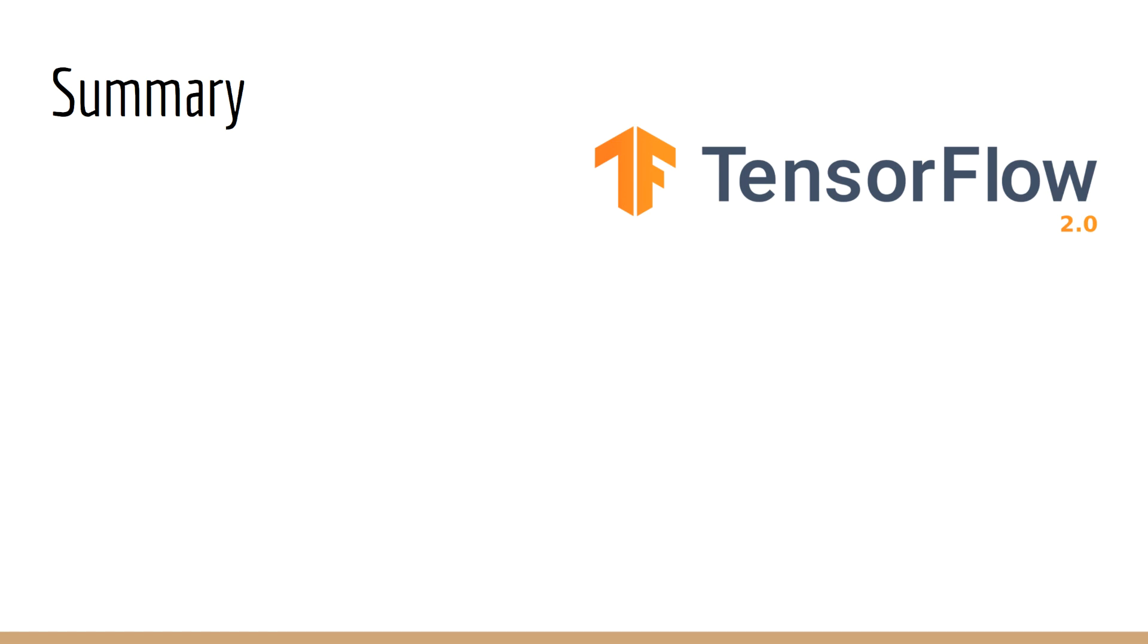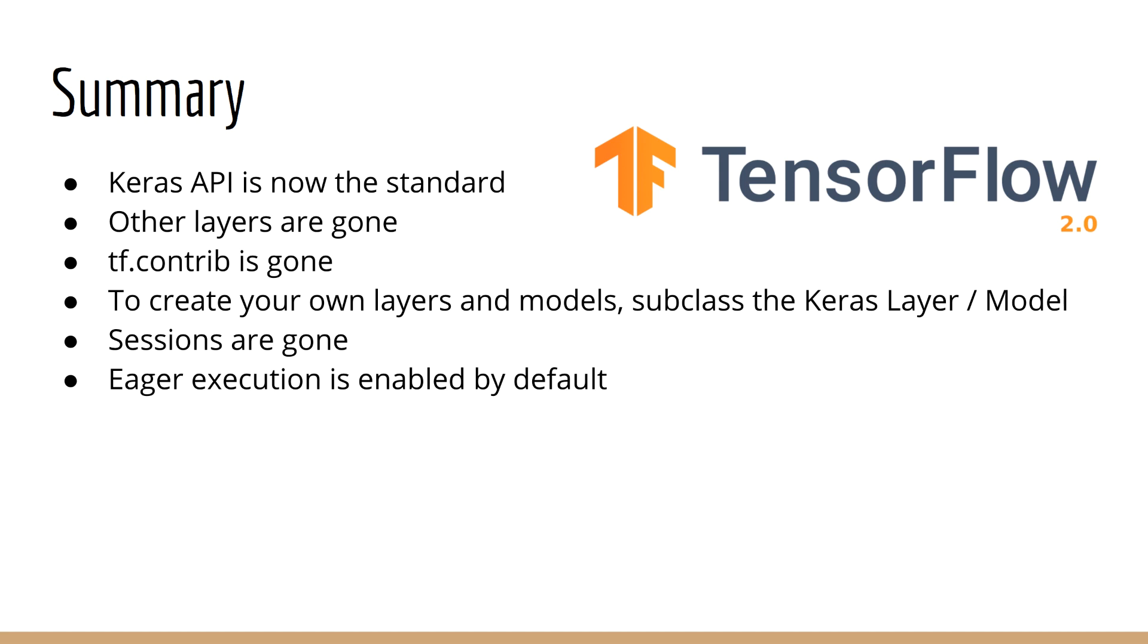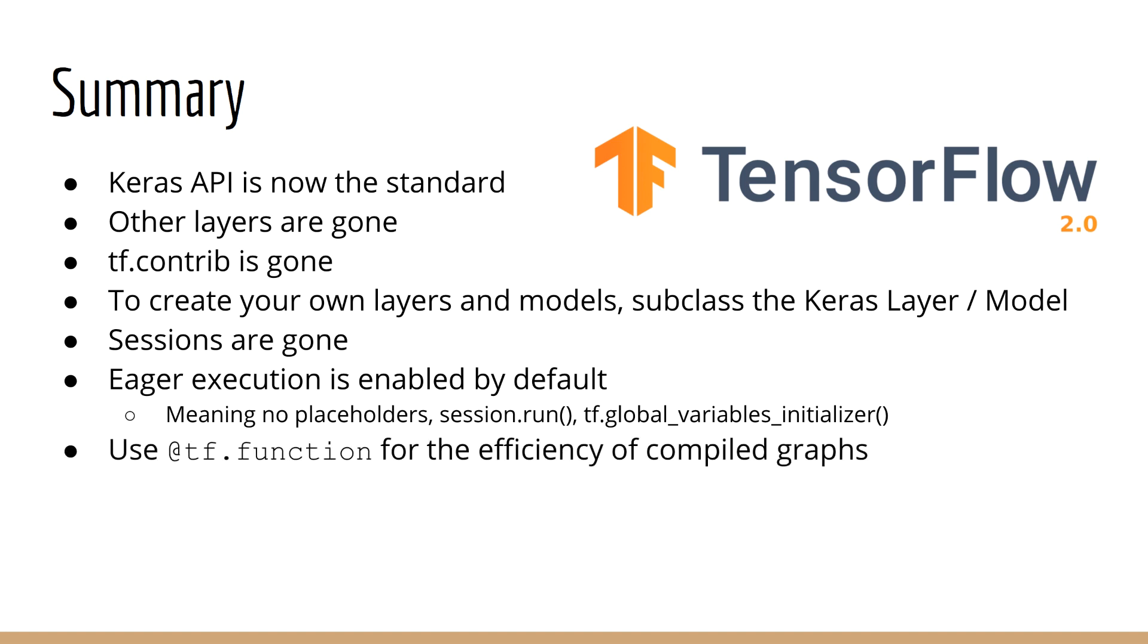To summarize everything in this lecture, here's what we learned. First, we reviewed something which we already kind of knew given the rest of this course. Using the Keras API is now the standard way of creating models. All the other pre-built layers are gone. tf.contrib is gone. If you want to create your own custom models and layers, you can subclass the Keras model class and the Keras layer class. Next, sessions are gone. Instead, eager execution is enabled by default. So there are no placeholders, no session.run, no tf.global variables initializer. All that stuff is gone. But if you want the efficiency of compiled graphs, then you should use the tf.function decorator.